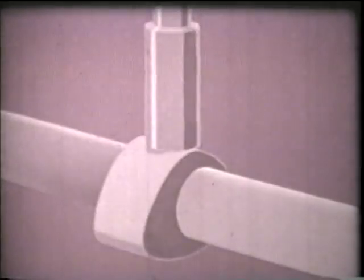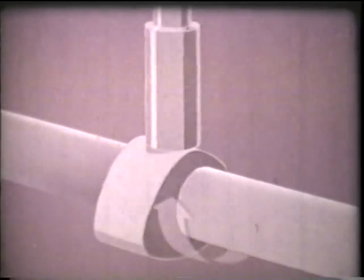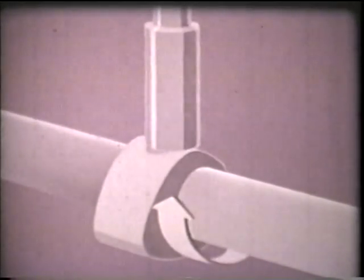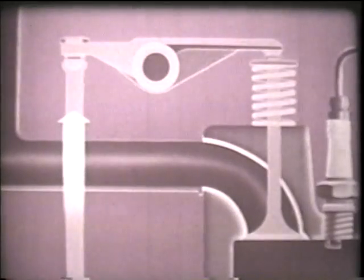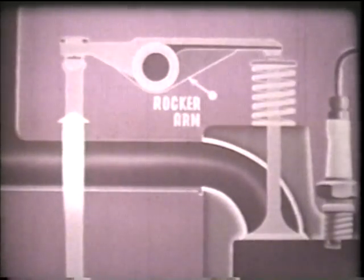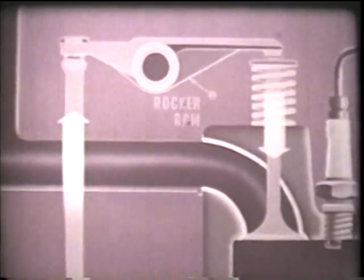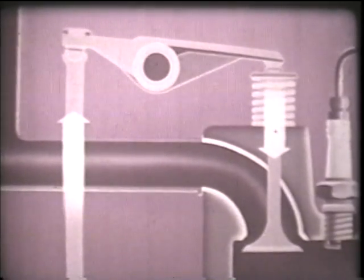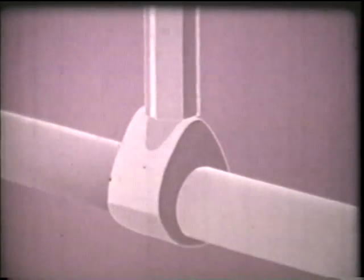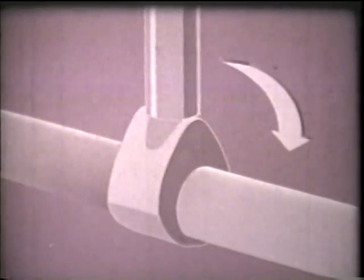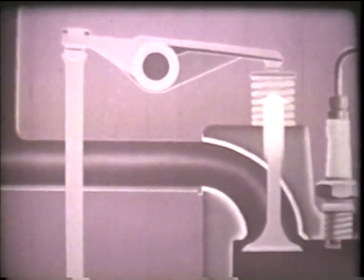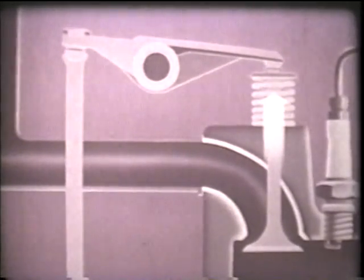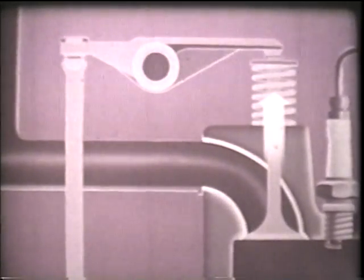Remember we said the valve must open at exactly the right time? Well, the high point on the cam comes around at exactly the right time and pushes upward on this rod, which in turn causes a rocker arm to push the valve down and open. When the high point of the cam passes by, releasing its pressure, this spring returns the valve to its normal position, which is closed, sealing the cylinder tight.